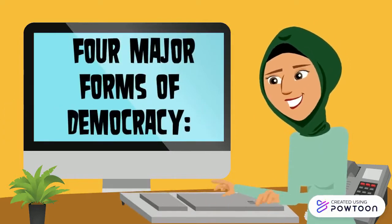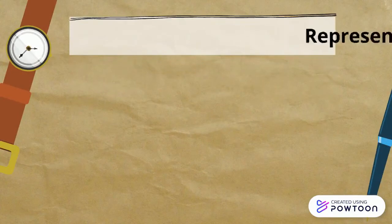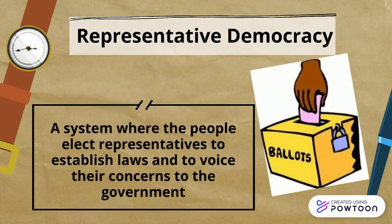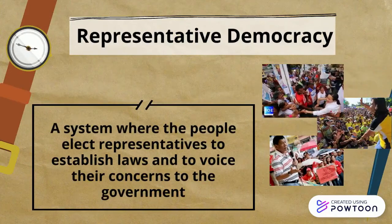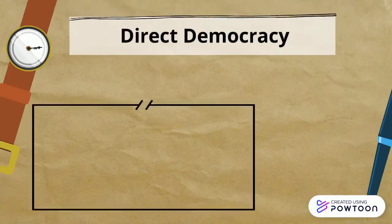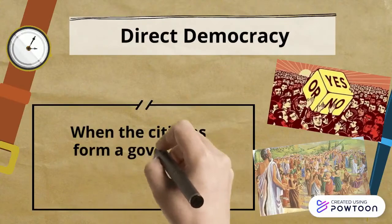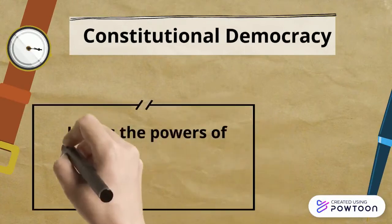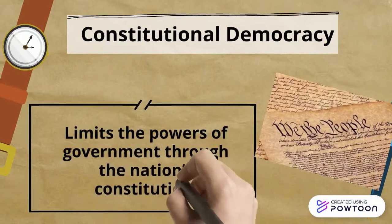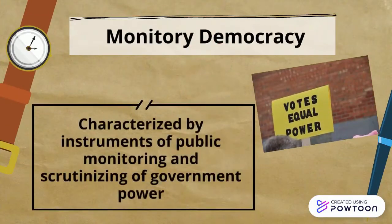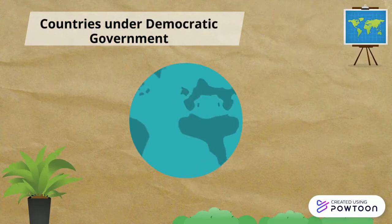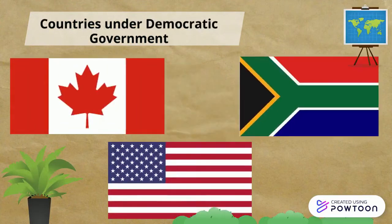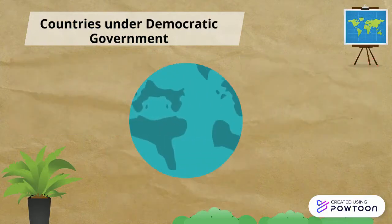Four Major Forms of Democracy. Representative democracy is a system where people elect representatives to establish laws and voice their concerns to the government. Direct democracy is when citizens form a governing body and vote directly on issues. Constitutional democracy limits the power of the government through the nation's constitution. And lastly, Monitory Democracy, characterized by instruments of public monitoring and scrutinizing of government power. Countries under democratic government include Canada, the United States, and South Africa, which are all examples of modern-day representative democracies.